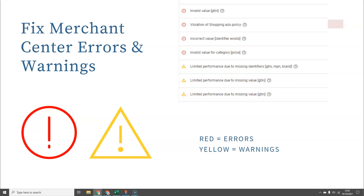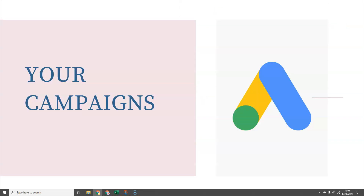The second area where we need to be optimising our shopping campaigns is inside the campaigns themselves. Most people are aware they would need to adjust their product group bids if they're not using automated bidding, and they will go in and check their device performance and adjust their device bids. That's the basics of campaign optimisation.